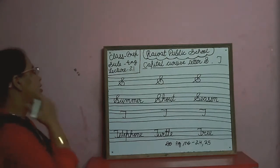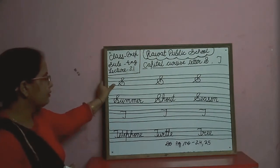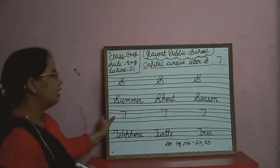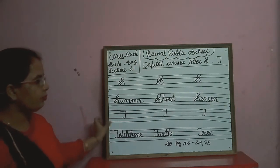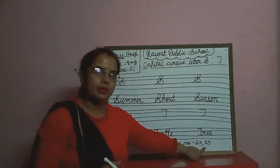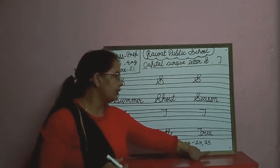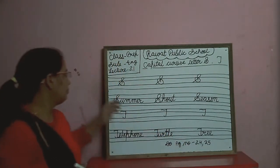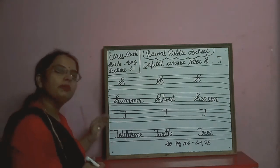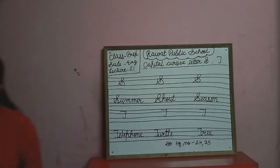Children, please make a capital cursive S and capital cursive T in your book, page number 24 and page number 25. You can make a capital cursive S and capital cursive T. Thank you.